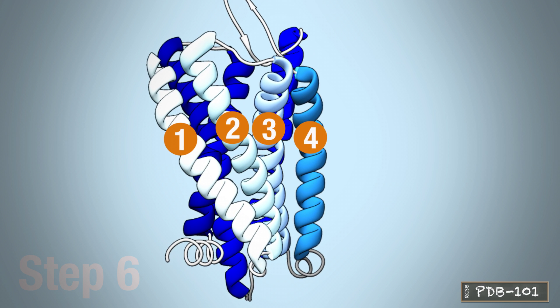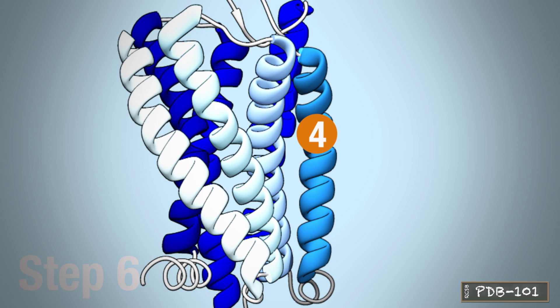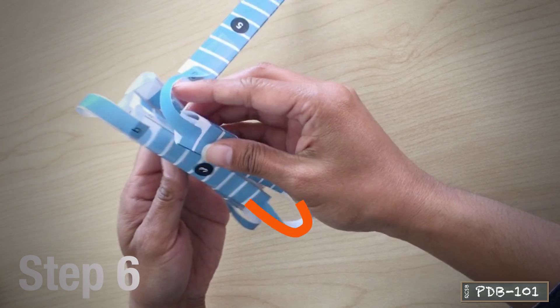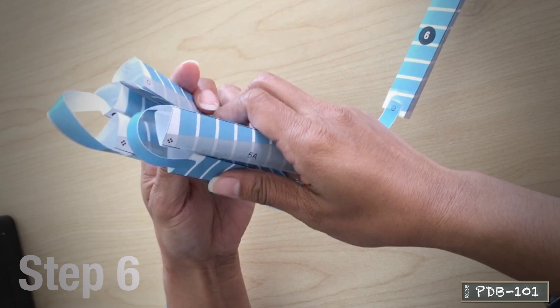In many GPCRs, the seven helix bundle is not perfectly symmetrical, and helix 4 is found towards the outside of the bundle. Form the intracellular loop between helix 3 and the extracellular one between helices 4 and 5, but let helix 4 dangle on the side.